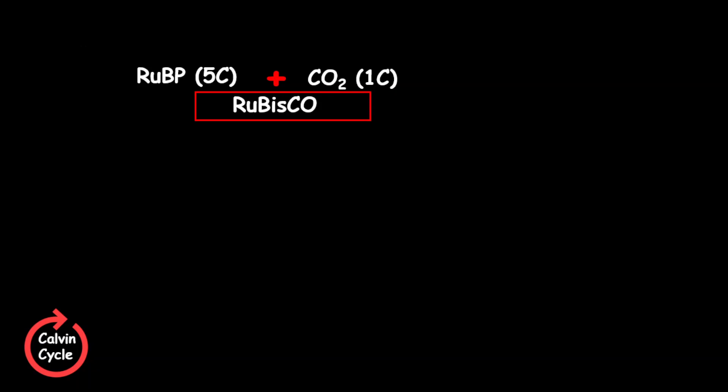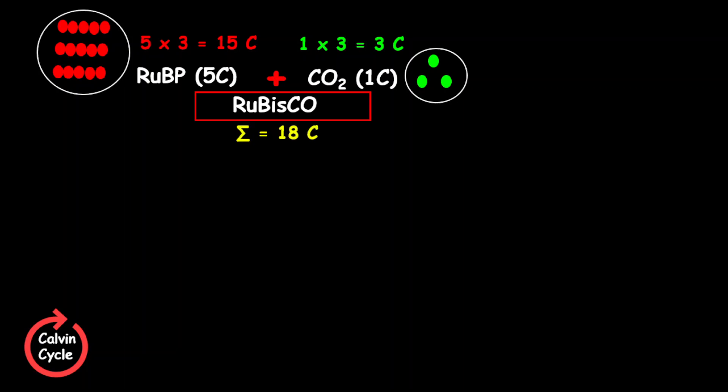For this particular reaction, it requires 3 molecules of RuBP. Therefore, RuBP supplies a total of 15 carbon atoms, which is 5 times 3. In terms of carbon dioxide, there are 3 carbon dioxide molecules, supplying a total of 3 carbon atoms. From this, we have a total of 18 carbon atoms. Point to note is that throughout the reaction or the cycle, we should maintain our 18 carbon atoms.